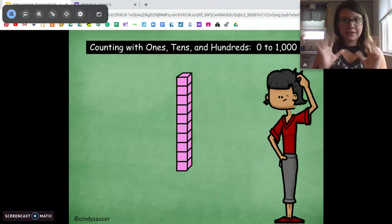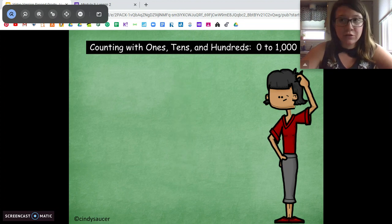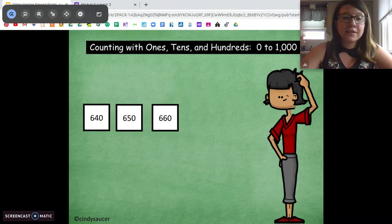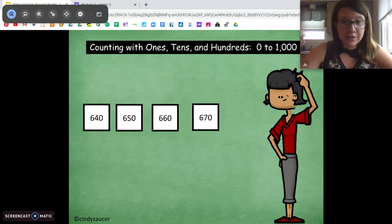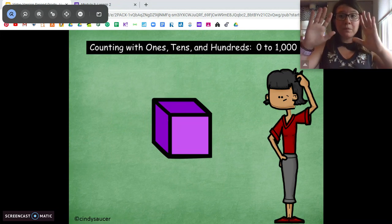Good. We're going back to tens. So we're at 630. We're going to count by tens moving forward. Here we go. 630, 640, 650, 660, 670, 680, 690. Oh! Pause. What's this?